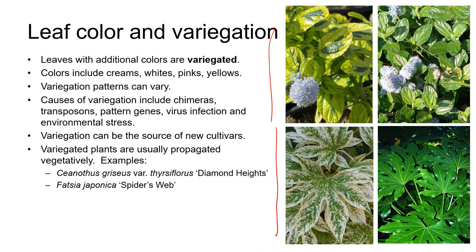From a horticultural point of view, variegation can be a good thing because it can be a source of new cultivars. From a propagation point of view, variegation is usually a trait that doesn't come true from seed, and therefore most variegated plants have to be propagated vegetatively from cuttings, divisions or tissue culture.